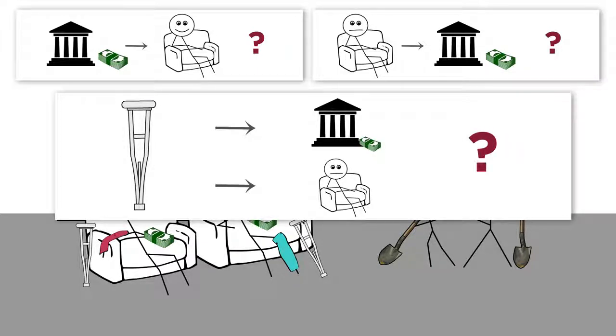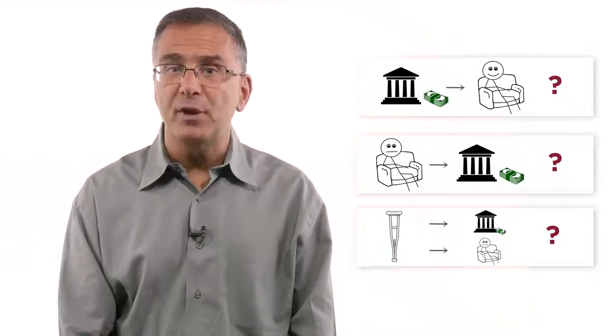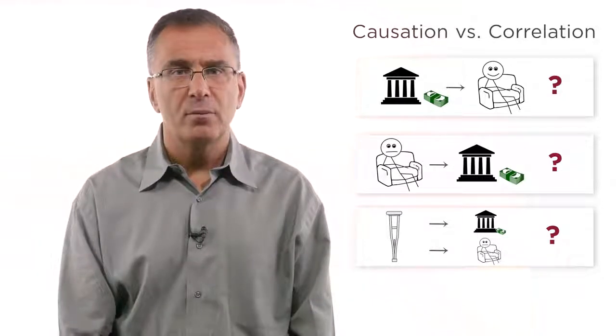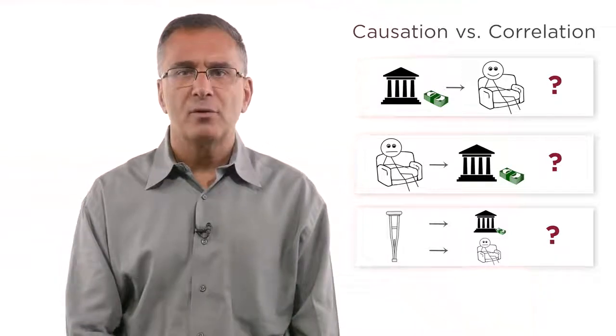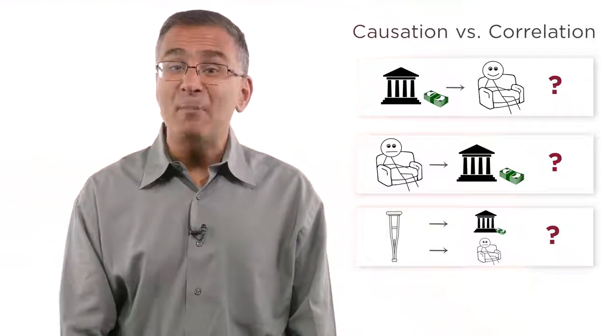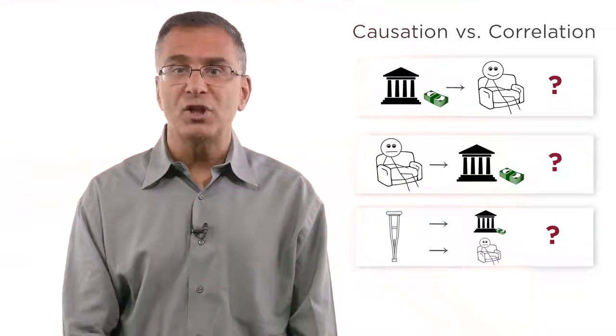This is an example of the biggest issue economists and researchers in many other fields struggle with, distinguishing between causation and correlation. Sure, people receiving government benefits may tend to work fewer hours. These two variables are correlated. But does that mean that these benefits cause people to work less? That's a trickier question to answer.